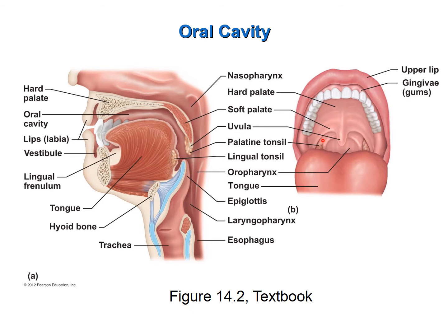You can see the palatine tonsils on the anterior view of the oral cavity. I'll also point out the frenulum that attaches the tongue to the floor of the oral cavity. This entire structure here is the tongue, and the labia, which are the lips. The salivary glands are not visible in this image, so we are going to look at another image to identify the salivary glands.